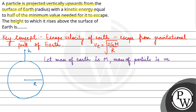So we have the escape velocity, and we can find the kinetic energy required to escape. Let's call that K_e, which equals half m v_e squared, where v_e is the escape velocity equal to 2GM upon R. So this will be equal to GM upon R. This is the kinetic energy required to escape.